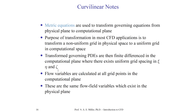The flow variables are calculated at all grid points in the computational domain and then transformed back to the physical plane. For every grid point where we have a Navier-Stokes solution using the metric equations, we transform back to find the solutions in physical space. The flow field variables are the same — u maps directly to u using the metric equations — which reduces difficulty in the process.